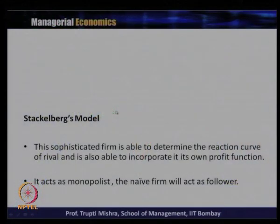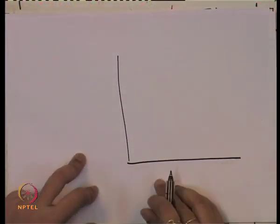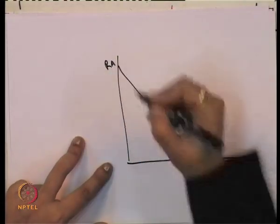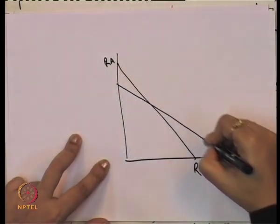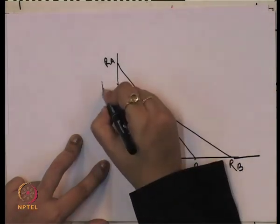Both the firms are in equilibrium because they are maximizing profit. Before going into this equilibrium, we will see graphically how they reach equilibrium. This is the reaction curve of firm A and this is the reaction curve function of firm B.